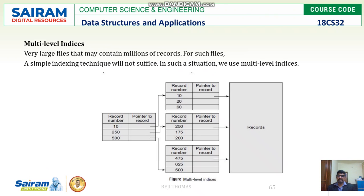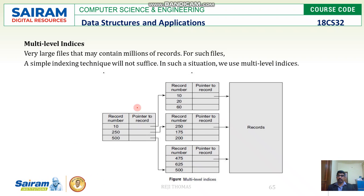Next are multi-level indices. This is used for very large files with millions of records. For such records, it is not advisable to store the address of every record, so we use multi-level indices — a simple indexing technique is not sufficient. You can see record numbers 10, 250, and 500 at the top level. Under 10, records from 10 to 60 are in one category; under 250, records in the 250 range; under 500, another set of categories. The final records are stored at the lowest level.